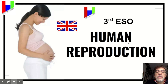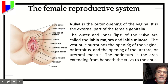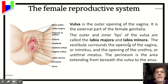We are going to study today the external anatomy of the female reproductive system. The external reproductive system is what we know as the vulva.